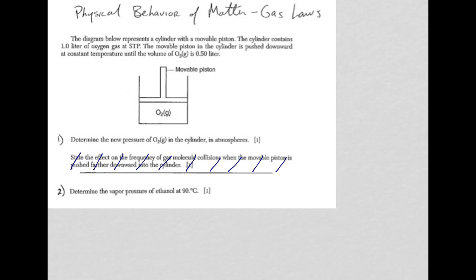All right, so here, in question one, there's information here at the top in this picture of this movable piston and oxygen gas being inside of the container. So for number one, it says determine the new pressure of the oxygen in the cylinder in atmospheres. Okay, so this is a calculation, and I need the information up at the top.